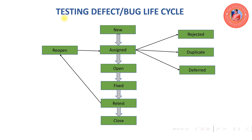In the defect tracking tool, each project uses one defect tracking tool per client requirement. We use defect tracking tools like Bugzilla, Jira, HP ALM, and ClearQuest — there are many. So one project requirement, one client requirement, one defect tracking tool.